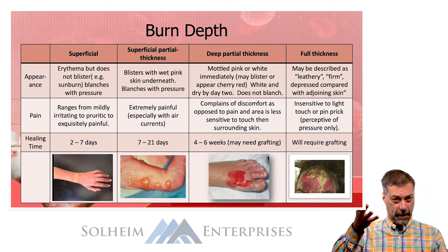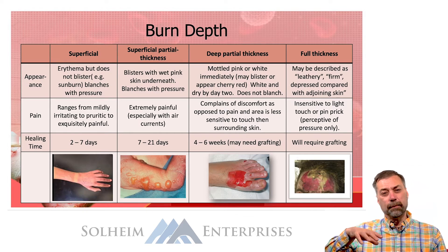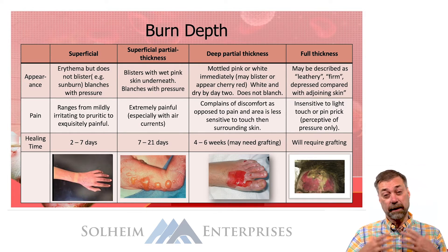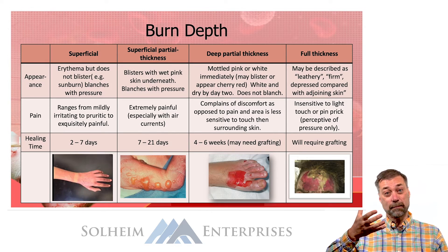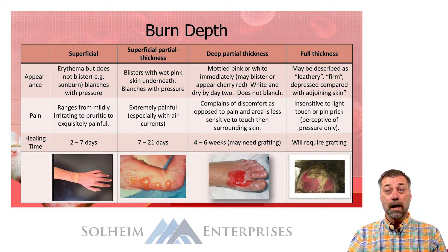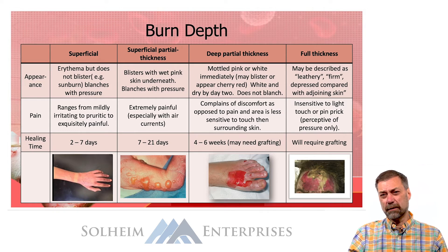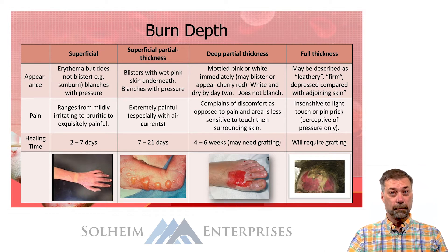A superficial burn — that's the one that burns only the epidermis — tends to get very reddened but it rarely blisters. You really need to burn down into those blood vessels in the dermis to get blistering. Blistering is simply capillary leakage: as plasma leaks but the skin is intact, you get that plasma collecting under the skin. In a superficial burn, we don't burn into the capillary beds, so blisters are not common, but the burn will appear reddened and will blanch with pressure.